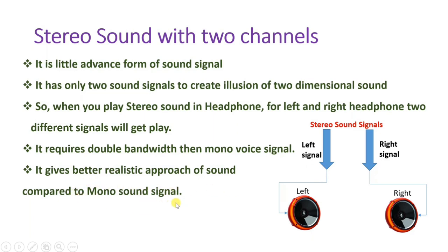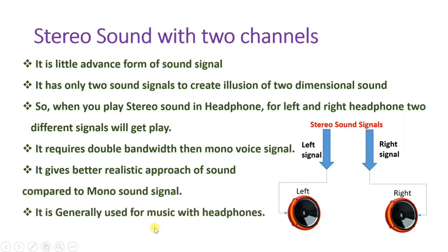Stereo gives a better, more realistic approach to sound compared to mono. In mono, only one signal is present and the same signal appears in both left and right; here, two different signals make the sound appear more realistic — you can identify from which direction sound is coming. We generally use stereo sound with two channels in music with headphones.